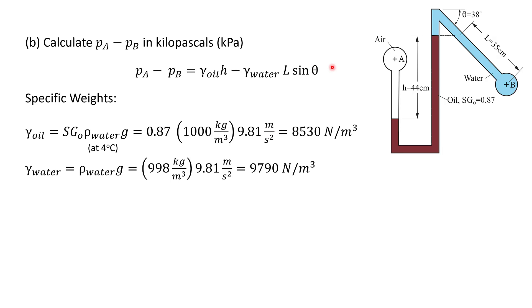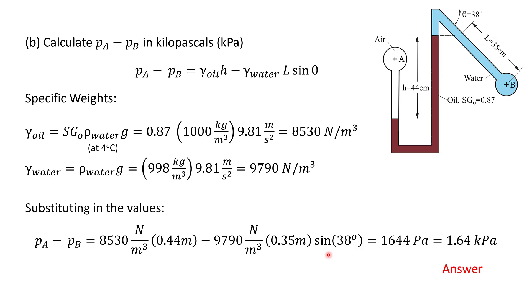Now we can make the substitutions into this expression. So pA minus pB is the gamma of oil, 8530, times the height, 44 centimeters, minus the gamma of water times l sine theta, which is 0.35 meters times the sine of 38 degrees, which gives a pressure difference of 1644 pascals. But the question asks for the pressure difference in kilopascals, so that's 1.64 kPa. And that's the answer to part b.